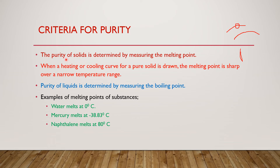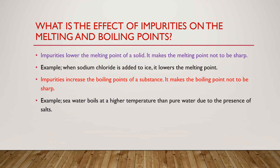For solids we look at the melting point, while for liquids we look at the boiling point. Examples of melting points: mercury melts at −38.83°C, water melts at 0°C, naphthalene melts at 80°C. For boiling points: the boiling point of water is 100°C and the boiling point of alcohol is 78°C.